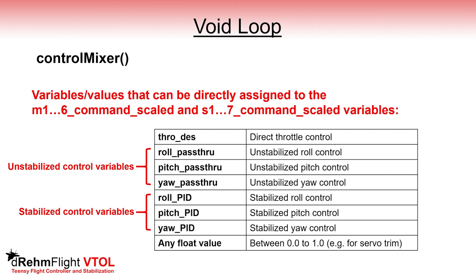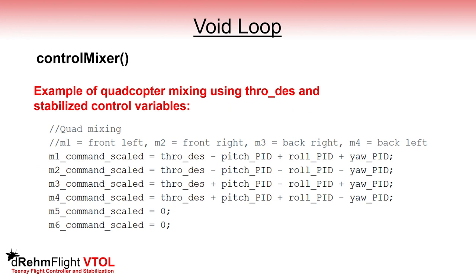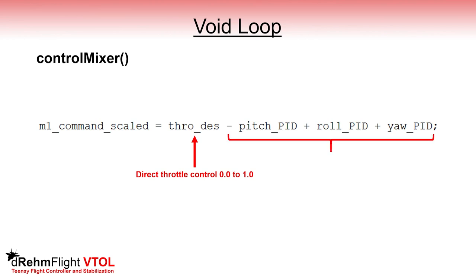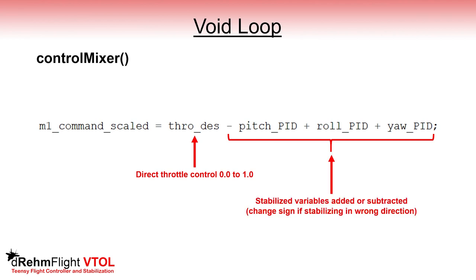You can also simply assign any float value between 0 and 1 to a servo or motor output — for example to set a servo to a fixed position, or to be used to trim a servo alongside other assignments. Here's an example of code you might see in the control mixer function, where stabilized assignments are made to the motor command scaled variables for a quadcopter. Unused variables can just be set to 0. For one motor command scaled variable, we can see it has direct throttle control and then a combination of roll, pitch, and yaw PID variables. The signs — either positive or negative — are determined by the way that the motor reacts to movement of the IMU, and may need to be flipped if it's trying to stabilize in the wrong direction.